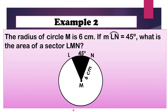Let's have example number 2. The radius of circle M is 6 cm. If the measure of arc LN is 45 degrees, what is the area of sector LMN? The shaded region is the sector LMN.